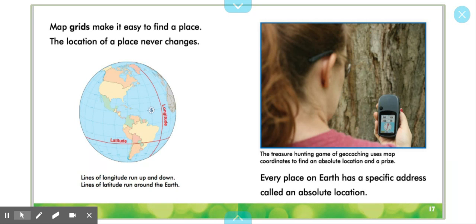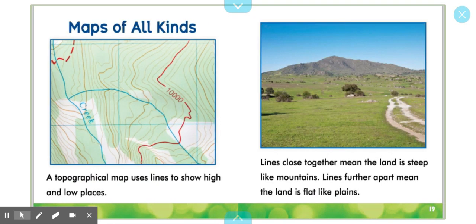The treasure hunting game of geocaching uses map coordinates to find an absolute location and a prize. Every place on Earth has a specific address called an absolute location.